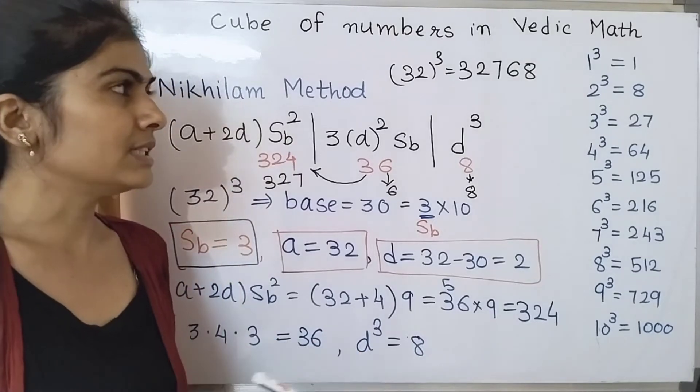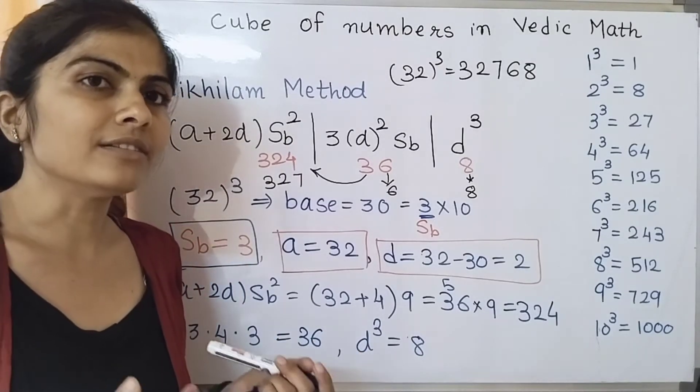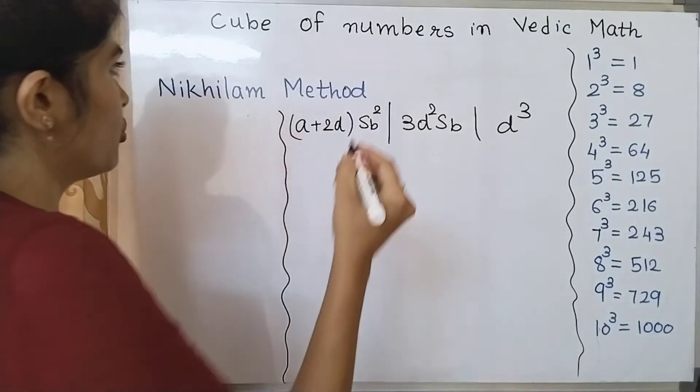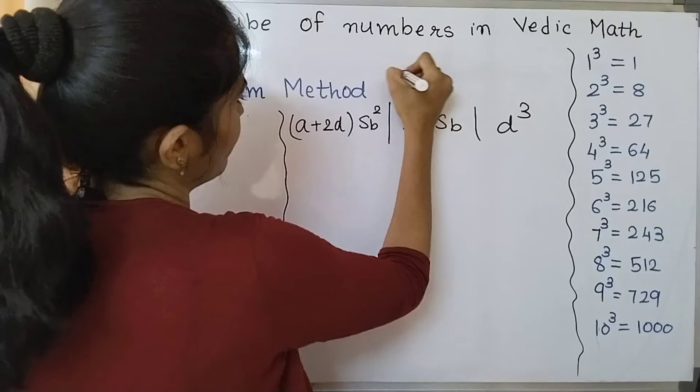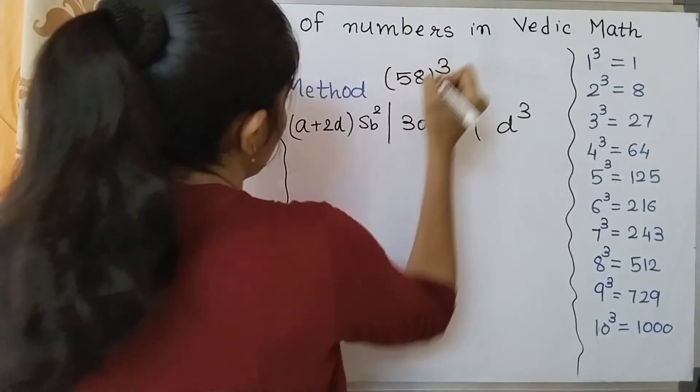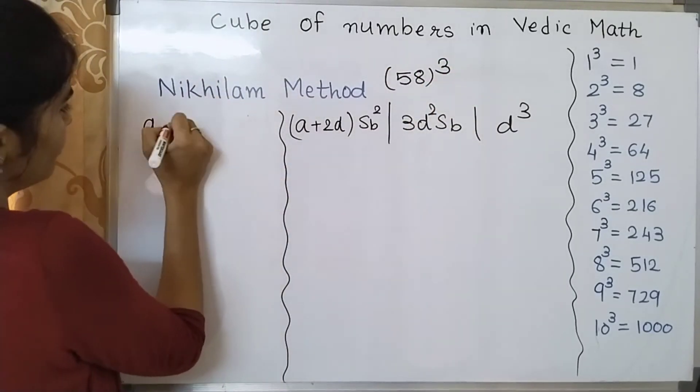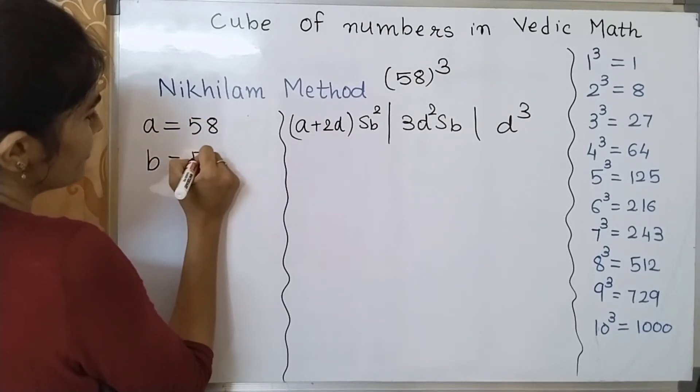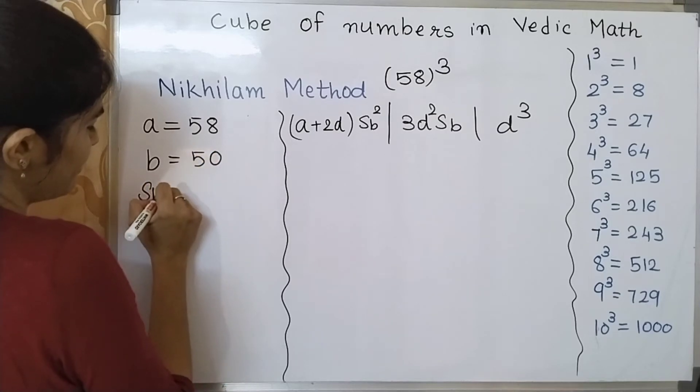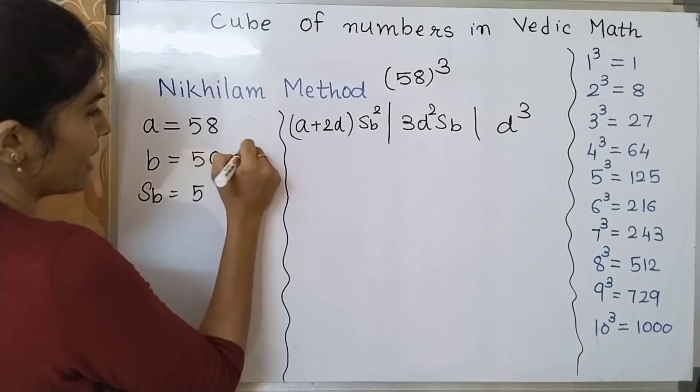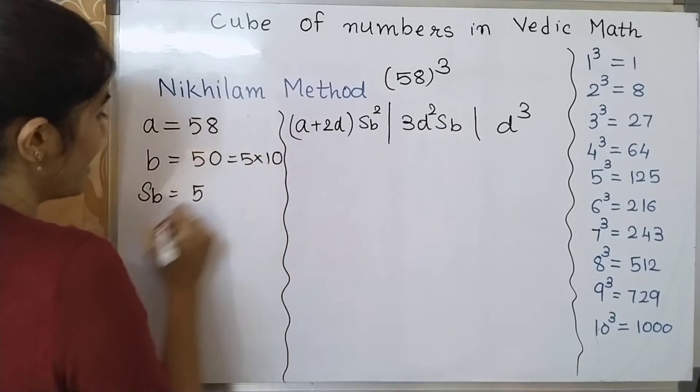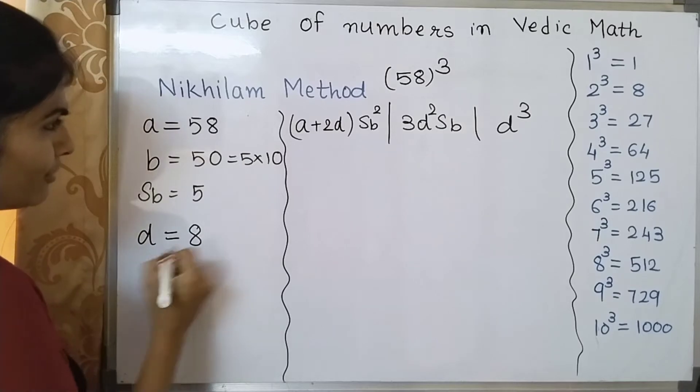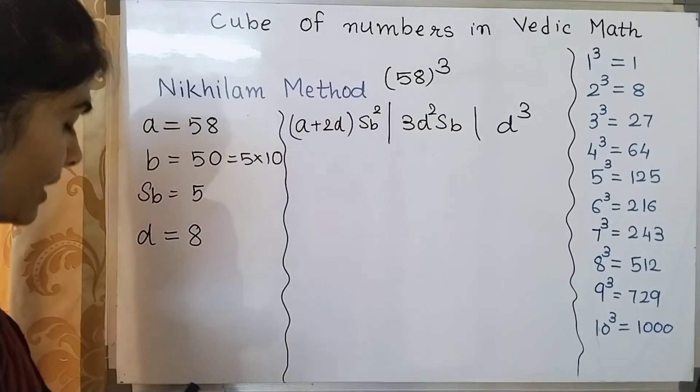This is how you can solve this. We will see some more examples so you can get clear idea about it. Now let's consider one more example, you need to find out cube of 58. So I can say that value of a is 58. What is my base? My base is 50. And what is my sub base? My sub base is 5 because this is 5 times 10. And how much is the difference? Difference is 8.